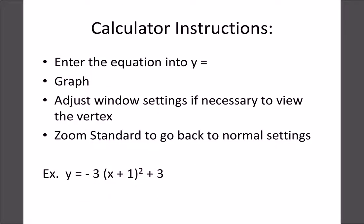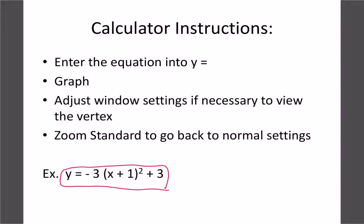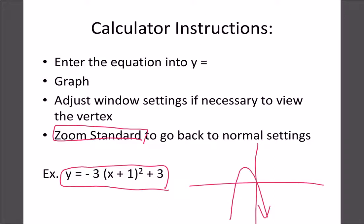Now let's figure out how to do these on our calculator. Go to Y= in the top corner and type in the equation. For the bottom example, enter: negative 3, brackets, x plus 1, brackets squared plus 3, then hit Graph. Sometimes you won't be able to see the graph completely — you want to see the vertex and the x and y-intercepts. If you can't, change your window settings, make them bigger or smaller, or hit Zoom Standard to get back to normal. You should get a graph looking something like that.